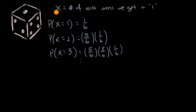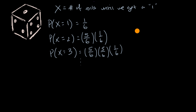This is a geometric random variable. Each trial — each roll — is either a success or a failure: we either get a one or we don't. We have the same probability of success on each trial. These are independent trials, and there's no set number of trials — it could take an arbitrary number of trials to get the first success. That's what tells us we're dealing with a geometric random variable.